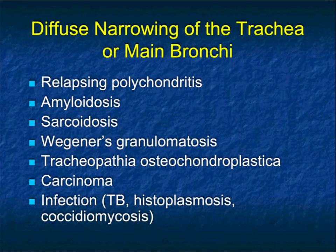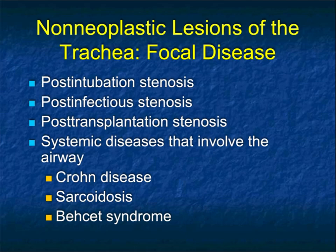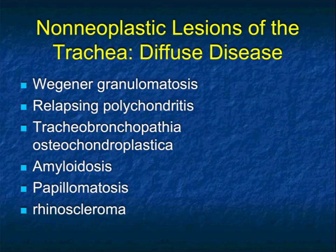We spoke about diffuse narrowing of the trachea and bronchi — relapsing polychondritis and Wegener's are two examples. We also talk about non-neoplastic lesions: post-intubation stenosis, post-infectious stenosis, or post-trauma can all cause problems. Systemic diseases that involve the airway — Crohn's, sarcoid, and Behcet's — that's pretty uncommon. Post-intubation stenosis is something we do see, both in younger patients and children as well as adults. The key question is: is it focal or is it diffuse? Post-intubation stenosis is very focal; Wegener's is more extensive.